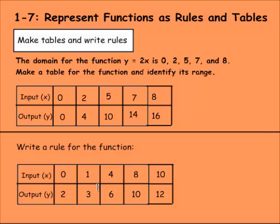Input of one, output of three. Input of four, output of six. Input of eight, output of ten. Input of ten, output of twelve. We need to find a relationship, and I think I've found it. Each one of these is two more than the input. So we would say y equals x plus two. That would be the rule function for this table.